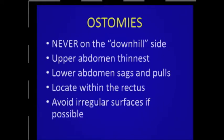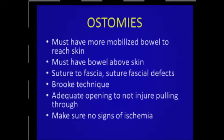Locate the ostomy always within the rectus — it decreases your incidence of prolapse. Avoid irregular surfaces, because the wafer and ostomy appliance has to fit over a flat surface, and if you have an irregular surface it's going to leak and be a problem forever. To do an ostomy in an obese patient, you have to have more mobilized bowel than in a normal patient because there will be retraction and tension. You have to have the bowel well above the skin — really well above. Always suture the bowel to the fascia to make sure it doesn't retract back into the abdomen.